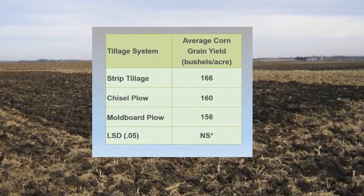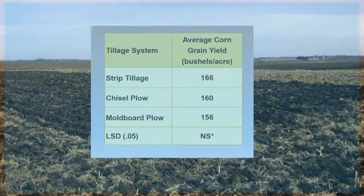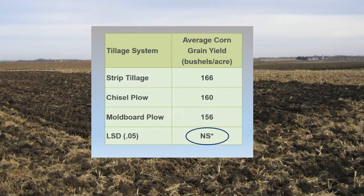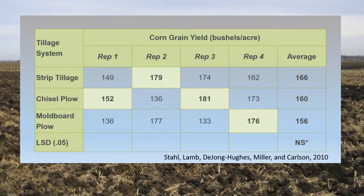Results from a University of Minnesota tillage trial demonstrate the importance of statistical analysis in helping determine if a yield difference is likely real. At this particular site, average corn yield for strip tillage was 10 bushels per acre greater than in moldboard plow. Yield was not statistically significant, however, so we couldn't say one tillage system resulted in a higher yield than another. This is noted by the NS for not significant in the table. Closer examination of the data shows how much variability was found in yield among the treatments. Each column of data represents a replication or rep of the treatments, and the shaded areas represent the highest yielding treatment within a rep.